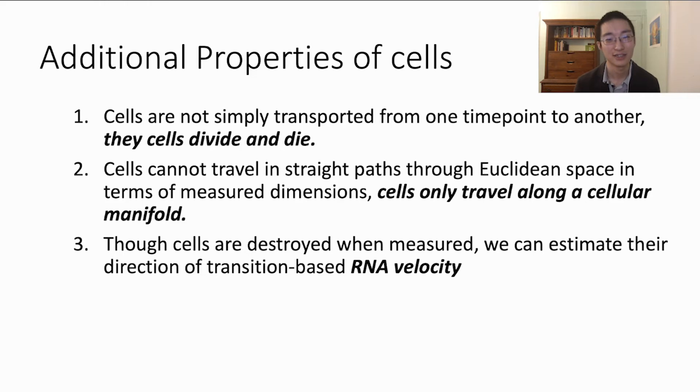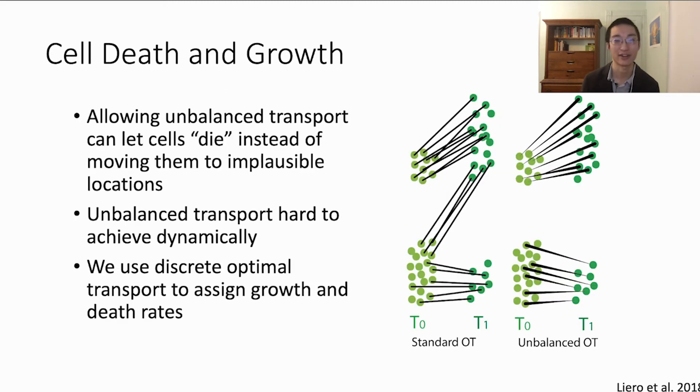And lastly, recent work based on RNA splicing shows how to measure the approximate change in transcriptome for these measured cells. This is now termed RNA velocity and gives an estimate of the direction of the cell at each measured time. So these priors can improve our model in the transcriptome and be efficiently encoded through loss functions of our continuous normalizing flow.